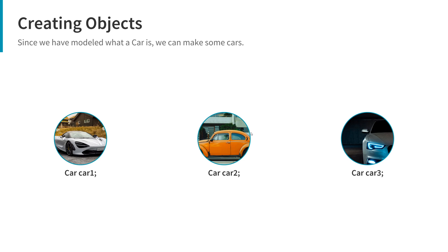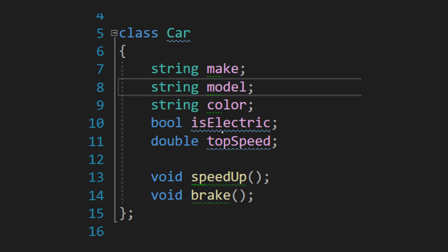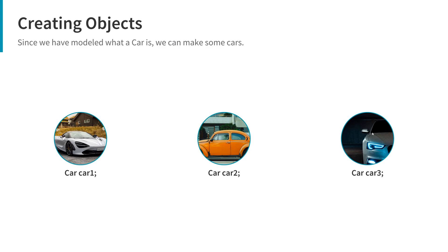Now that we've defined what a car contains, we can create instances of the car class, which are known as objects. On the screen we have three different cars defined using the car type from the car class. Each car object — car one, car two, and car three — will have the same variables and functions defined in the class. They're basically twins: same attributes and member functions, but we can give them each different values.